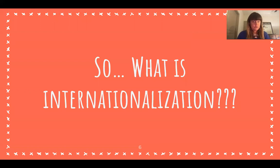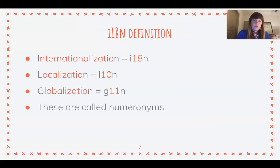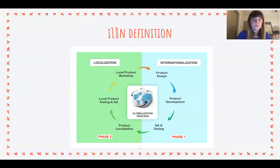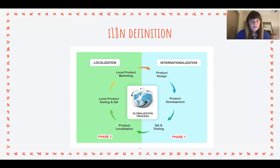There are three terms that come up a lot when researching internationalization: internationalization, localization, and globalization. A quick note — if you ever see them shortened like i18n, those are called numeronyms, in the same way that we often shorten accessibility to a11y. So they're just shortened versions of those words. As developers, most of what we're doing is going to be on the internationalization side of things, not the localization side.